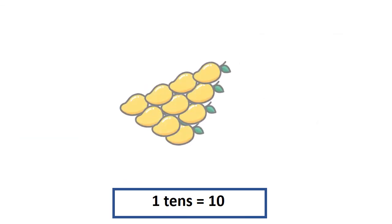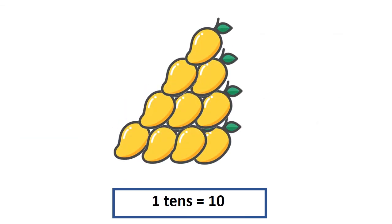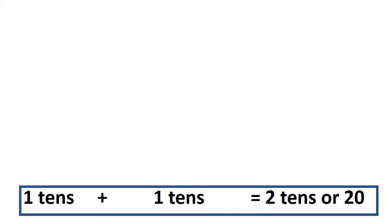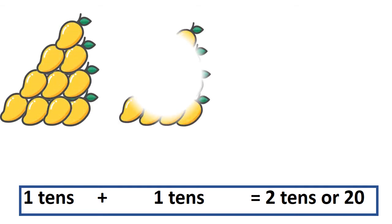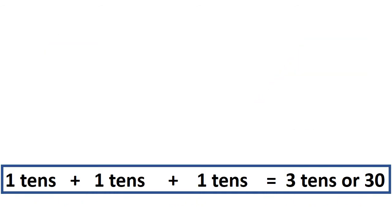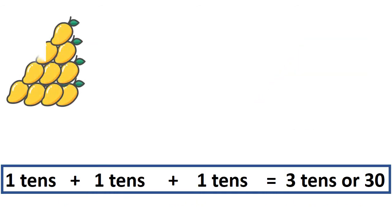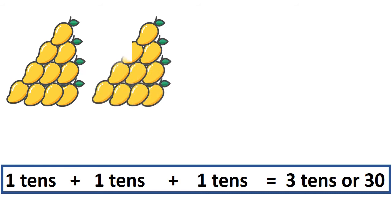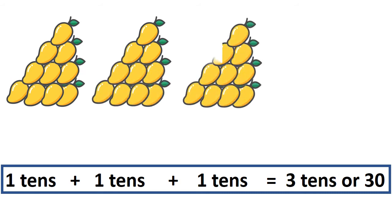The girl put 10 mangoes together and said, see, 1 tens is equal to 10. See, 1 tens and 1 more tens together makes 2 tens or 20. 1 tens and 1 more tens and 1 more tens make 3 tens or 30.